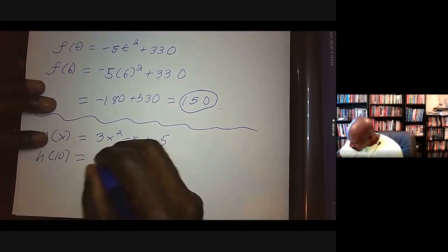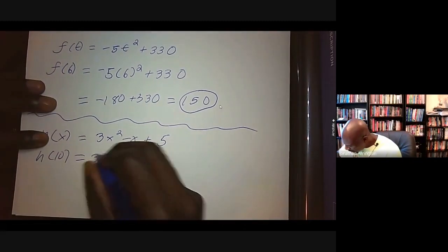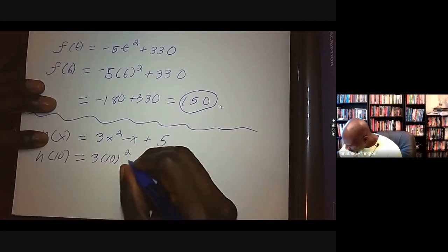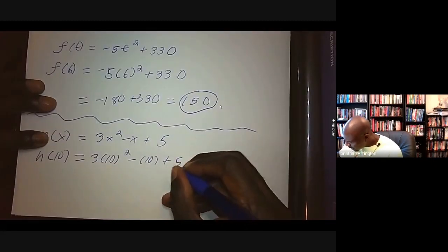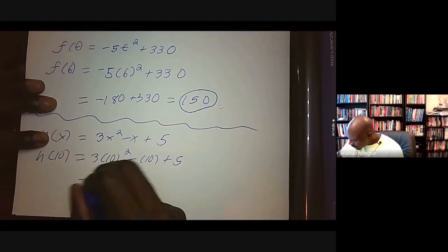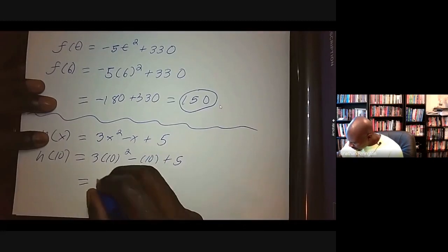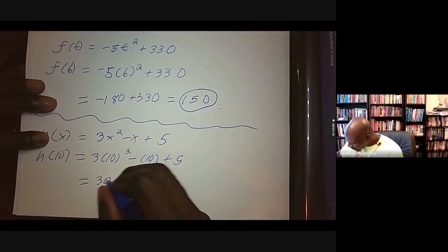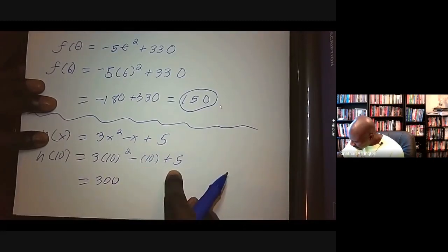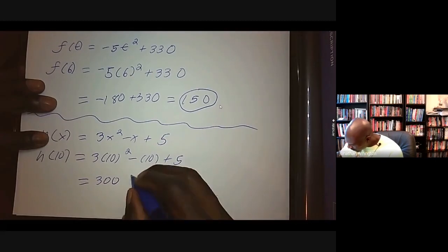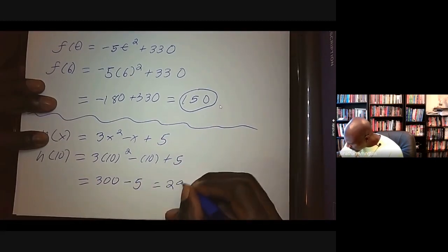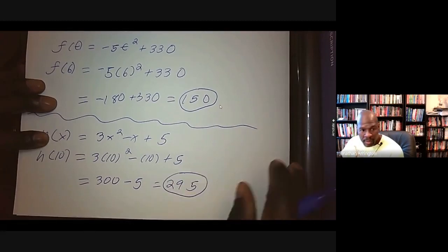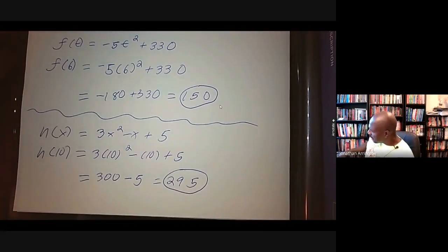h(10) = 3(10²) - 10 + 5. That's 3(100) = 300, minus 10 plus 5, so that's minus 5, giving us 295. Very simple.